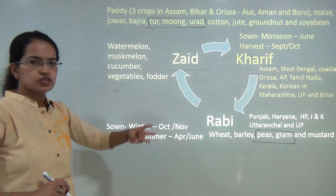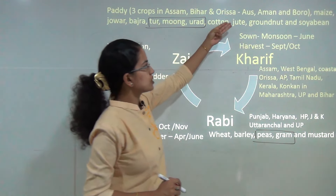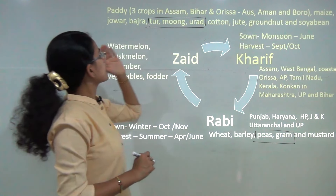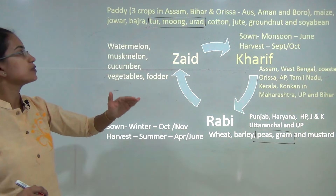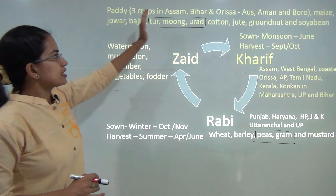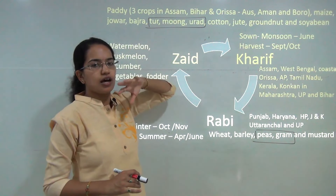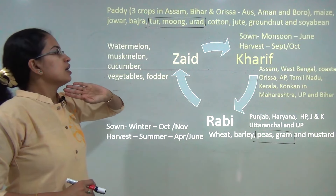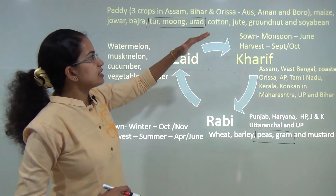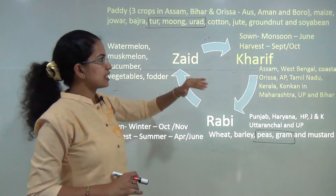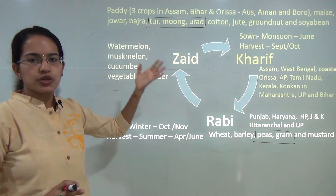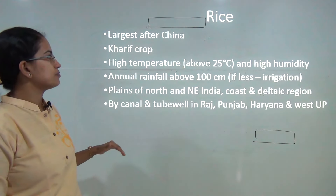Rice has three seasons known as Aus, Aman, and Boro — these are the three crops of paddy grown under Kharif cultivation, which is important to remember. Other Kharif crops include jute, cotton, groundnut, and soybean.